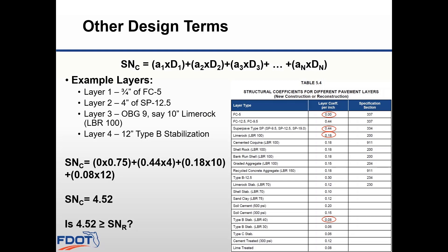The next step is to compare this to your required structural number to make sure you're equal to it or greater than it. You don't want to exceed the required structural number by a lot because this would be a costly over-design. If your calculated structural number is less than your required structural number, you need to make changes — you could try increasing your structural layer or selecting a higher base group.